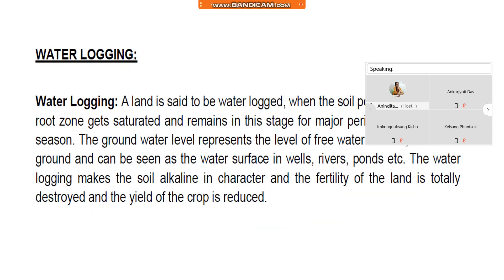Next, waterlogging. A land is said to be waterlogged when the soil pores within the crop root zone get saturated and remain in this stage for a major period during the crop season. The groundwater level represents the level of free water surface within the ground and can be seen as the water surface in wells, rivers, ponds, etc. Waterlogging makes the soil alkaline in character, and the fertility of the land is totally destroyed and the yield of the crop is reduced.